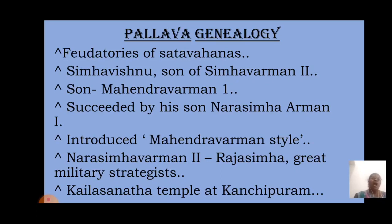Several titles were adopted by these kings. Simhavishnu was also called Avani Simha. Mahendravarman I had several titles: Sankirnajati, Mattavilasa, Gunabhara, Chitrakarapuli, and Vichitra Chitta. Narasimhavarman I's titles included Mamalla and Vatapikonda — he was called Vatapikonda because he captured Vatapi during the war.